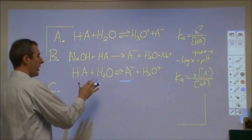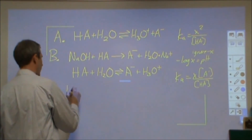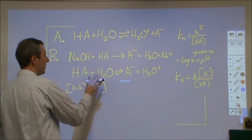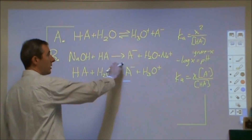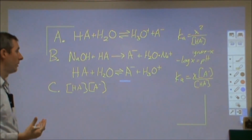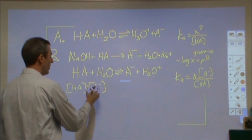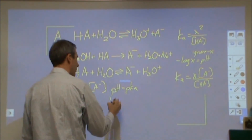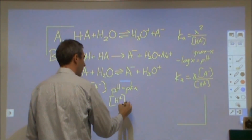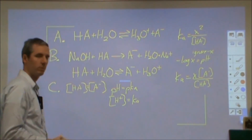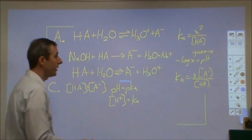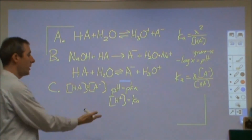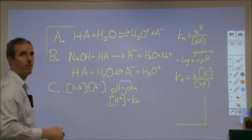At point C — the half-equivalence point — HA and A⁻ are equal to each other. You've neutralized exactly half of the HA to produce that same number of moles of A⁻. When those two are equal, pH equals pKa. Or equivalently, H⁺ concentration equals Ka. X equals Ka, that's your H⁺ concentration, and the negative logarithm gives your pH.